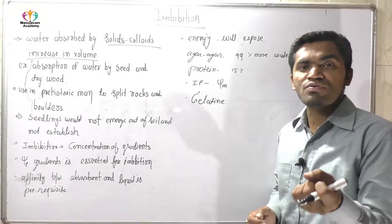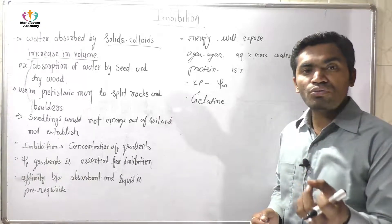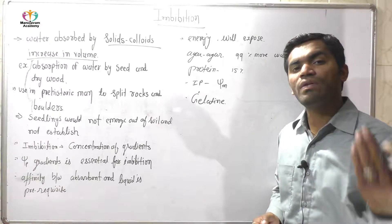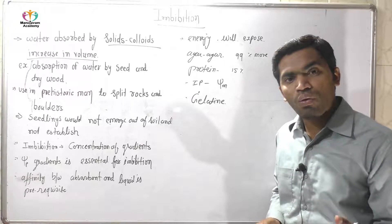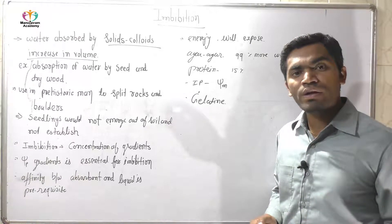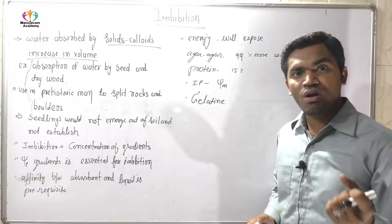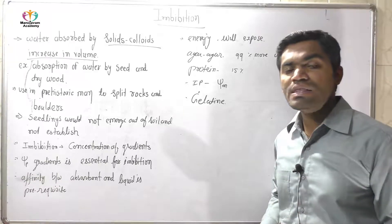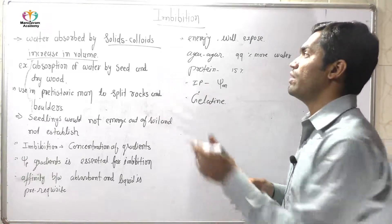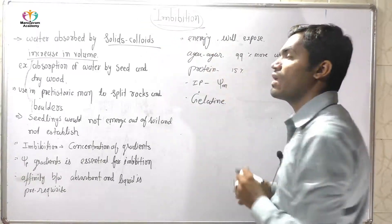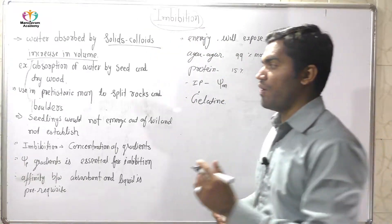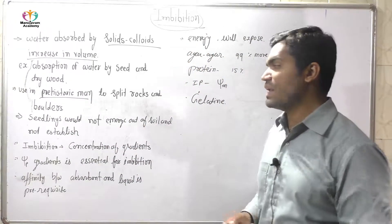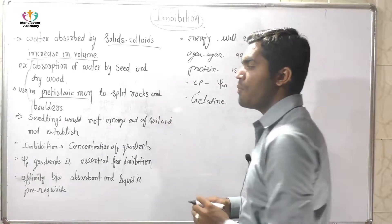the seed absorbs water, and due to the absorption of water, the cell volume will increase. If any wood absorbs water, and due to the absorption of water the wood size will increase — that condition is called imbibation. This was very important for prehistoric man to study and split rocks and fortresses.